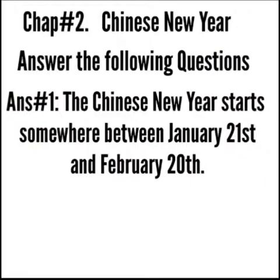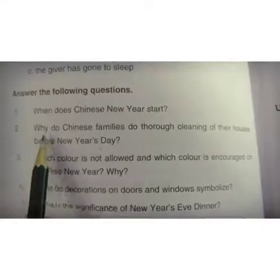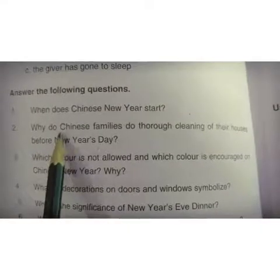Question number one: When does Chinese New Year start? The answer is: the Chinese New Year starts somewhere between January 21st and February 20th. یعنی چینی سال نو 21 جنوری اور 20 فروری کے درمیان کہیں نہ کہیں شروع ہوتا ہے۔